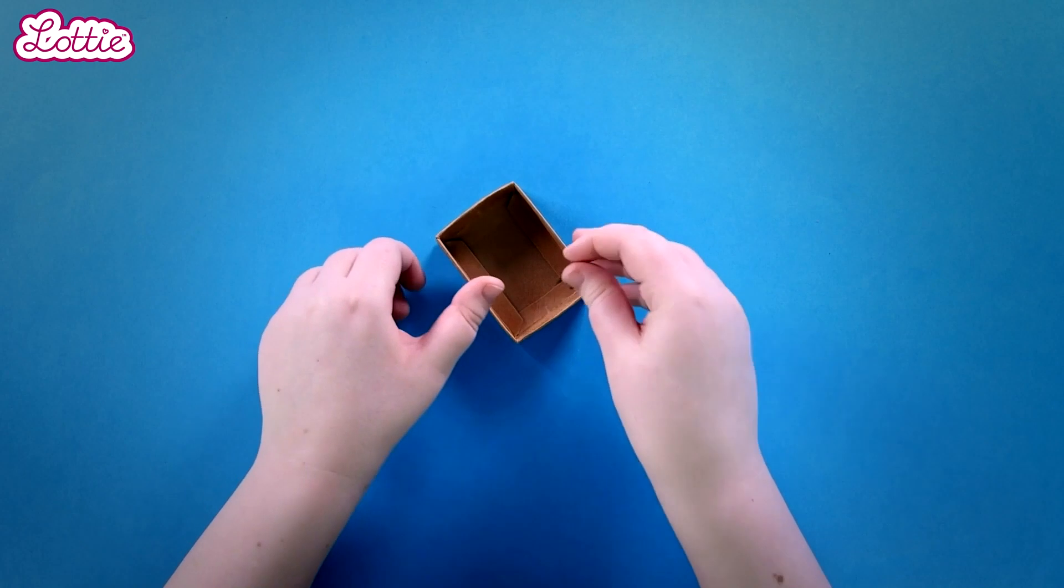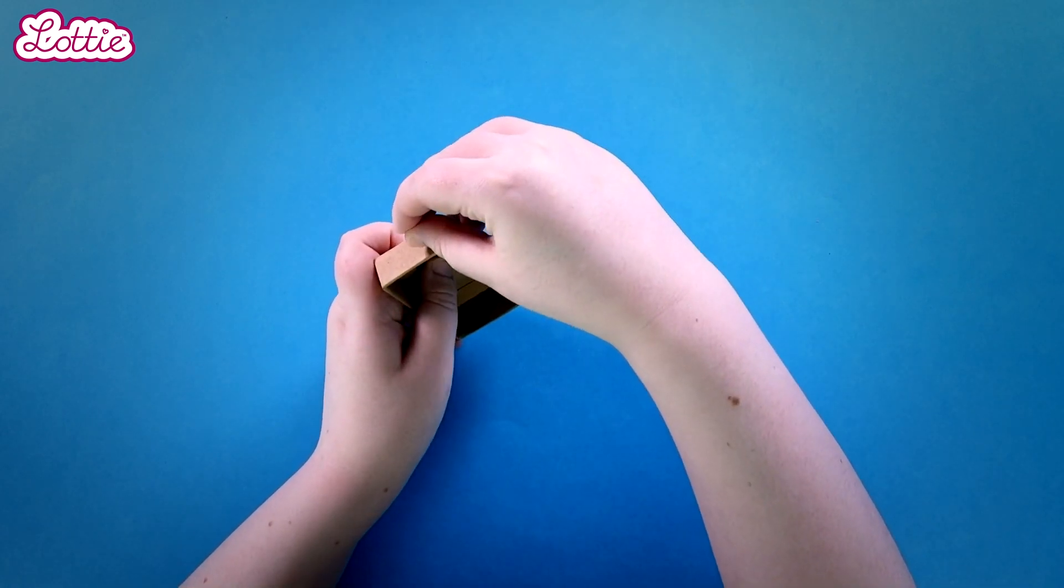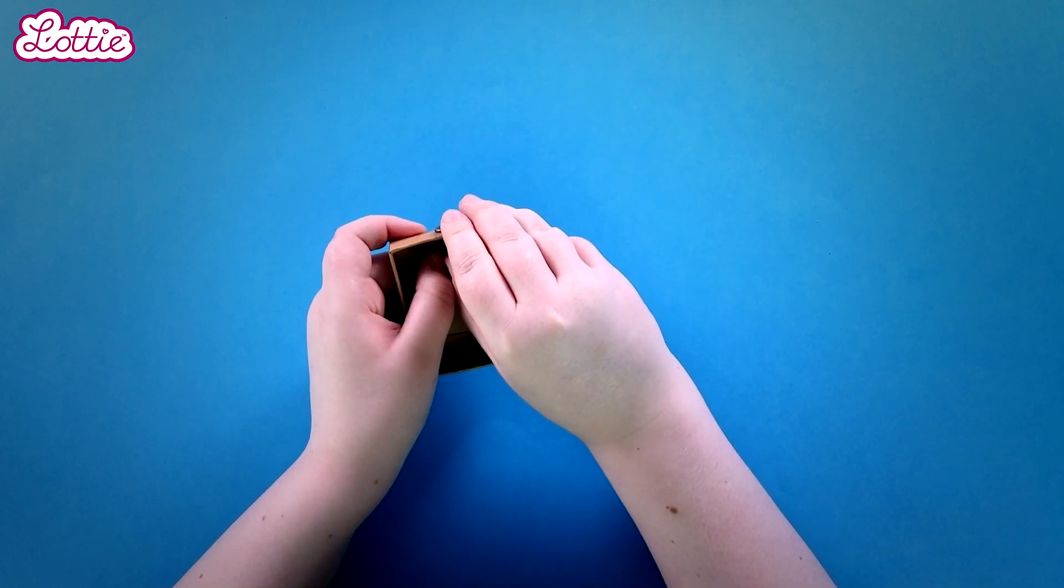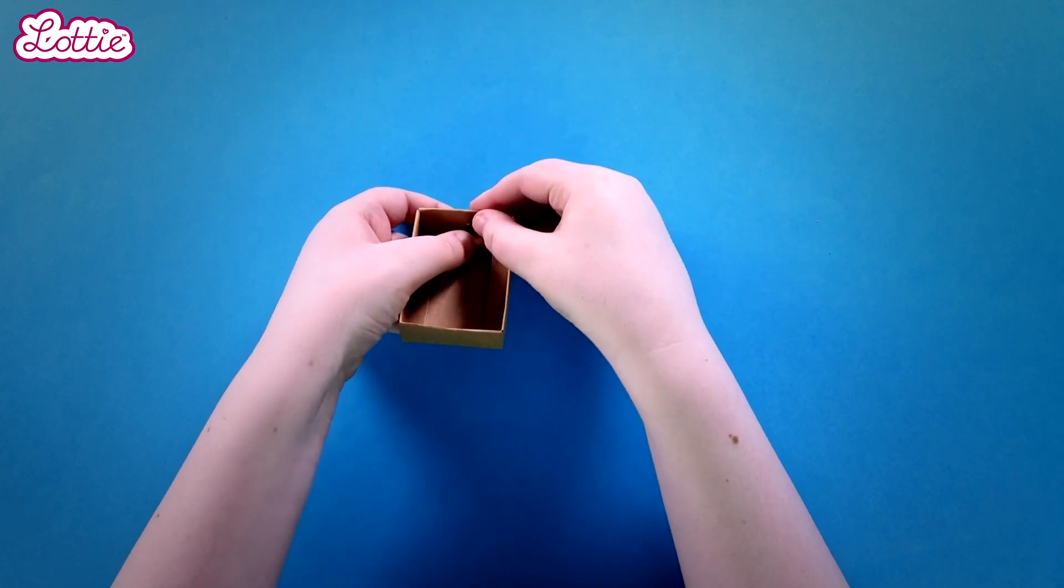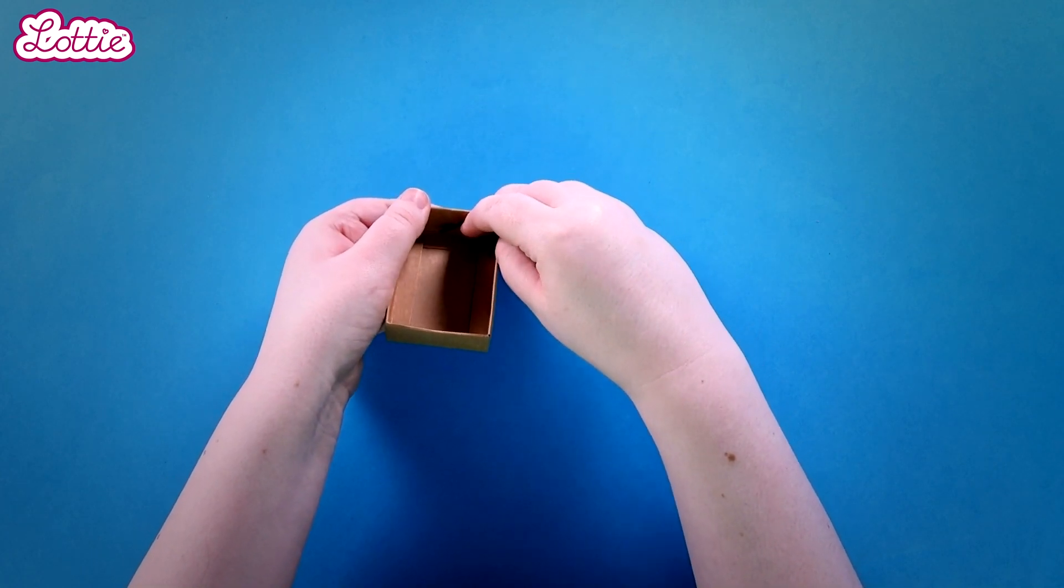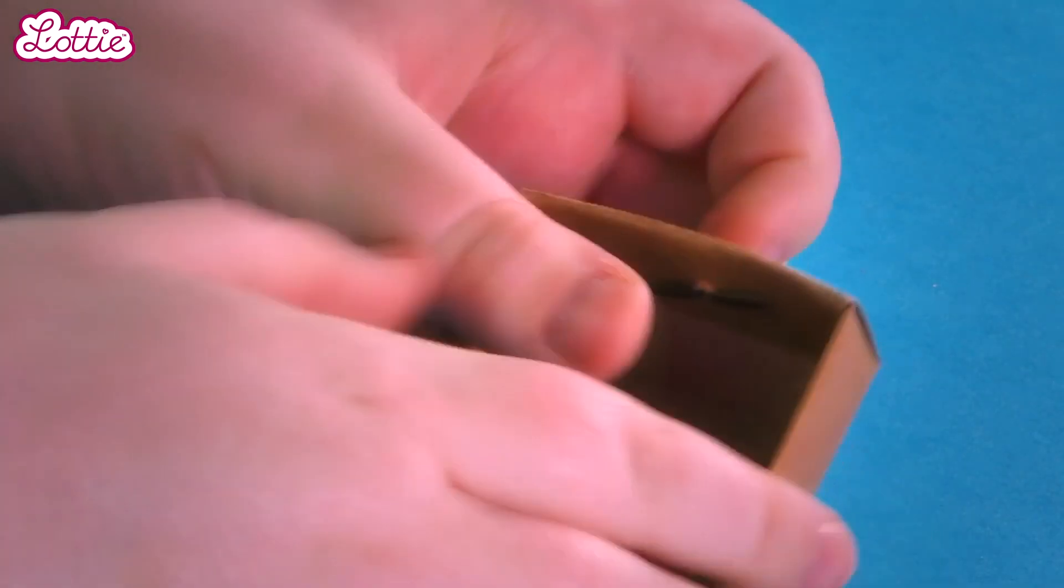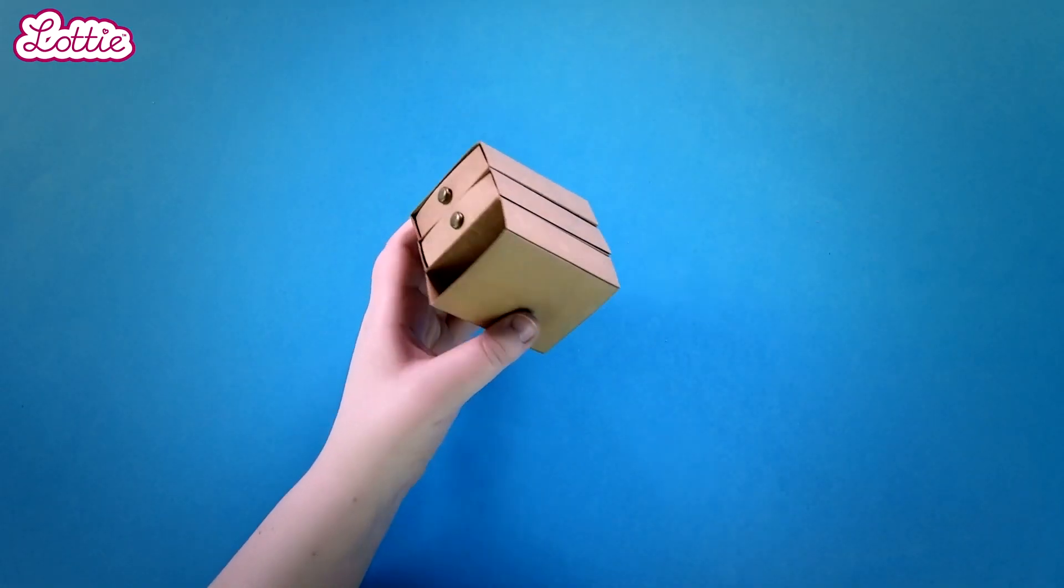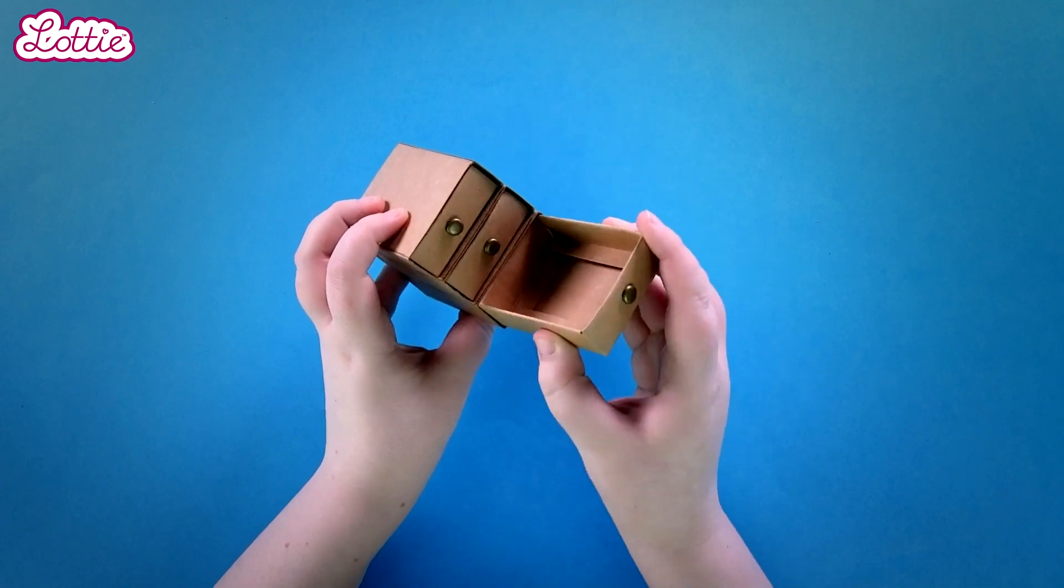For my handles, I use butterfly pins. You could get them at most craft shops. Just push them through the hole and fasten. If you like, you can just glue some buttons to the front for a simpler solution. Oh, but this does look cute!